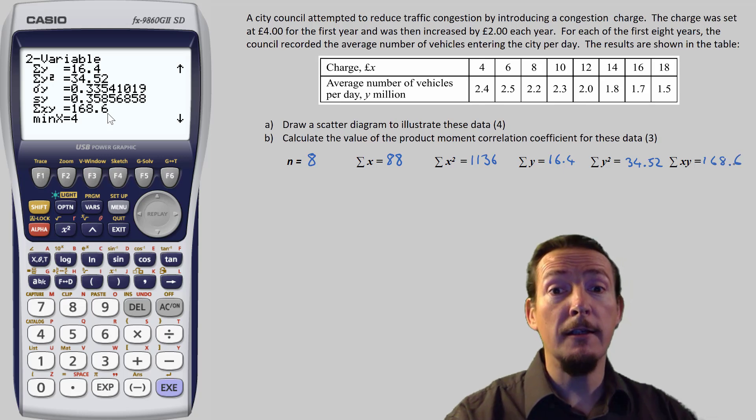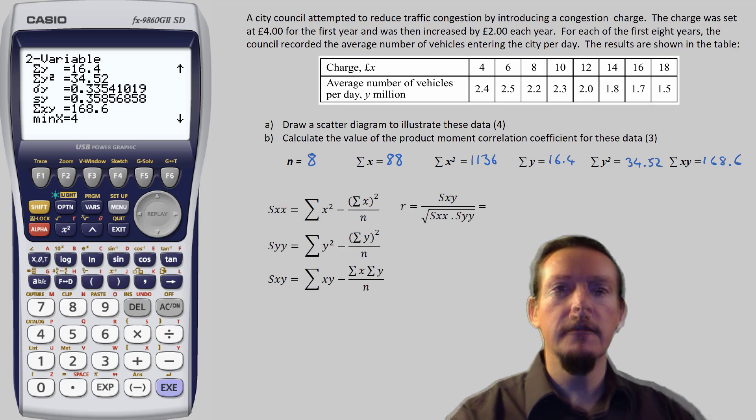Now, whilst your calculator will also churn out a value for PMCC, we will need to show some method to get all the available marks for this question. So let's write down the PMCC formulae. We would normally need to evaluate these three formulae, and then sub our answers into the fourth to find PMCC.